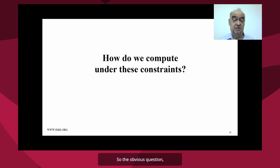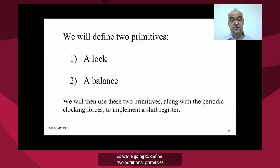So the obvious question: how do you compute under these constraints? So we're going to define two primitives. The first is a lock and the second is a balance. And then we're going to build our computational system on these two primitives. These along with periodic clocking forces will allow us to implement a shift register and then a Fredkin gate.